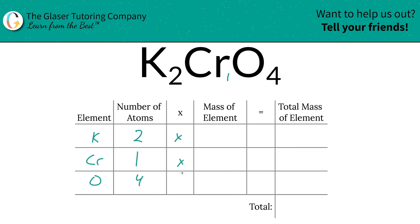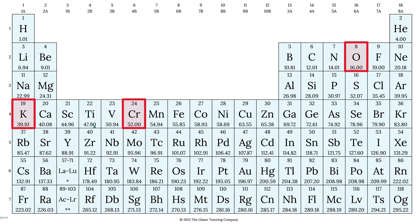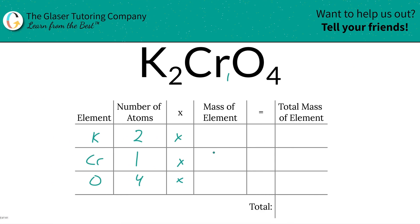So we simply take those numbers, and then we're going to multiply it by the mass of each particular element. The mass are found here on the table. So potassium is 39.10, chromium is 52, and oxygen is 16.